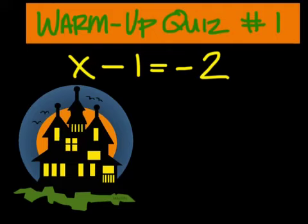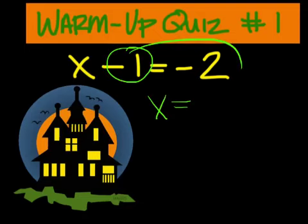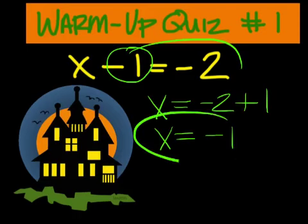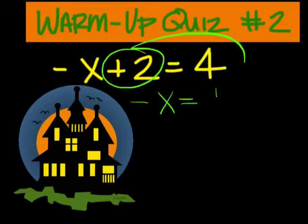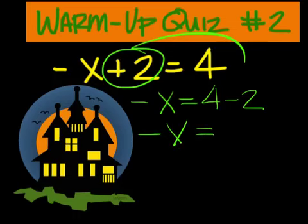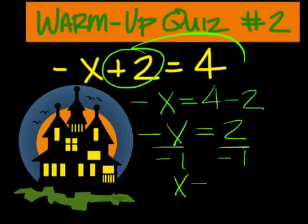On this problem, you must move this to the right side and change the sign to plus. Answer is negative 1. Move this to this side, change the sign, it makes it minus 2. And you have 4 minus 2 is 2, but you have to divide both sides by negative 1 to get negative 2.